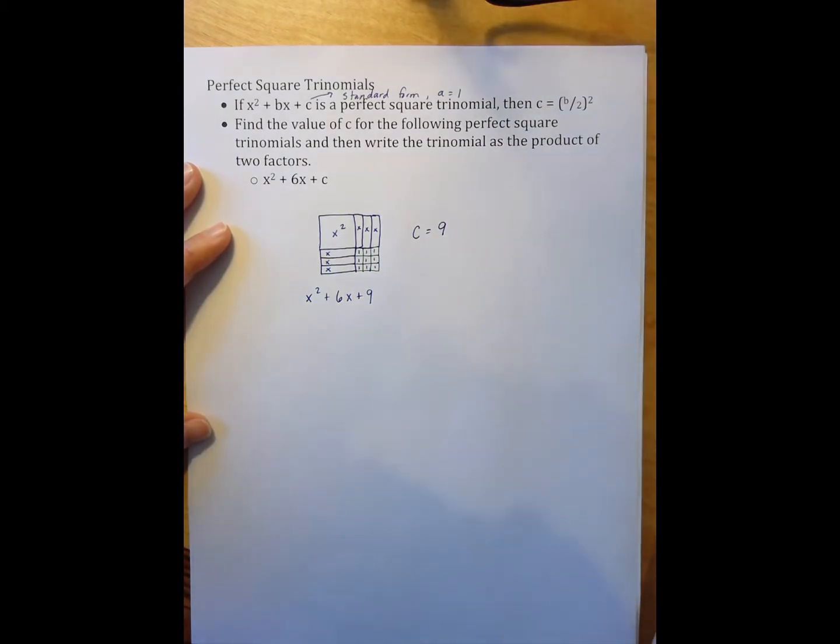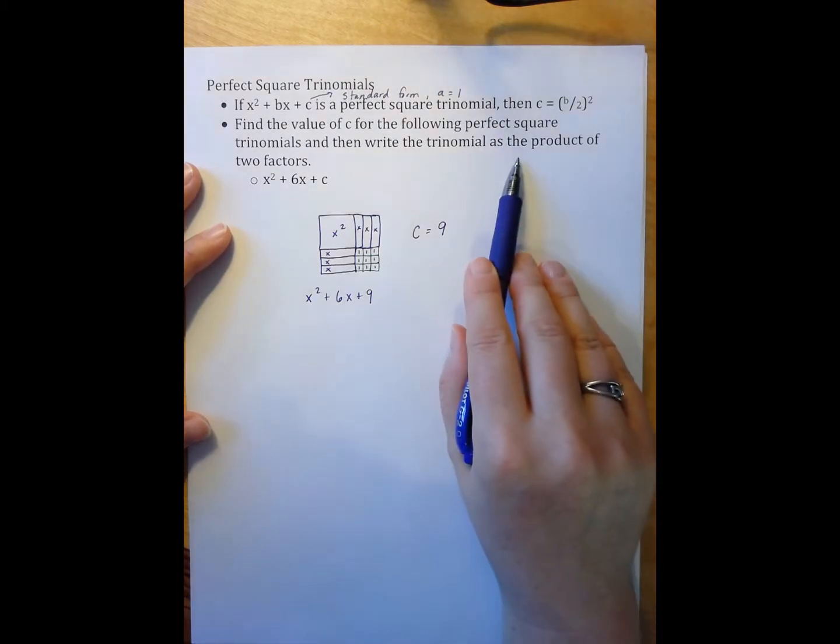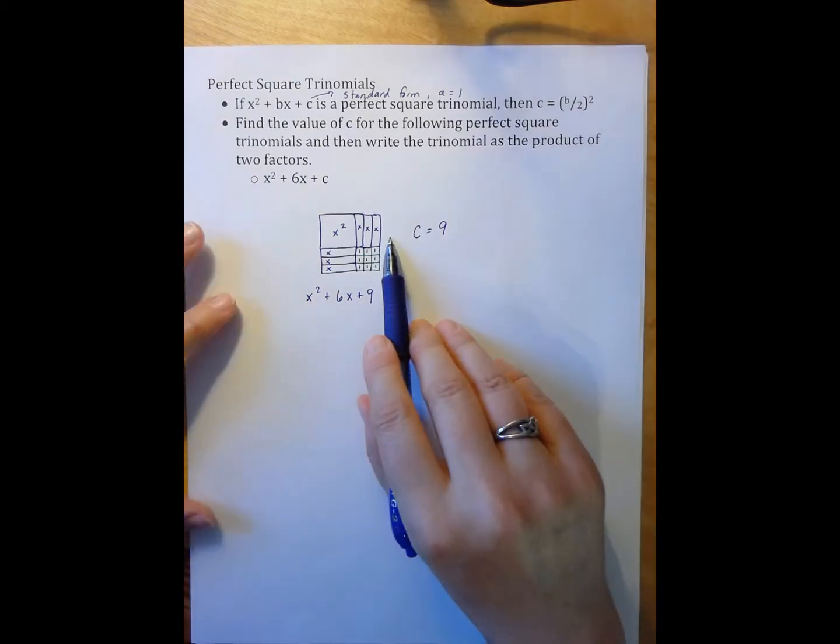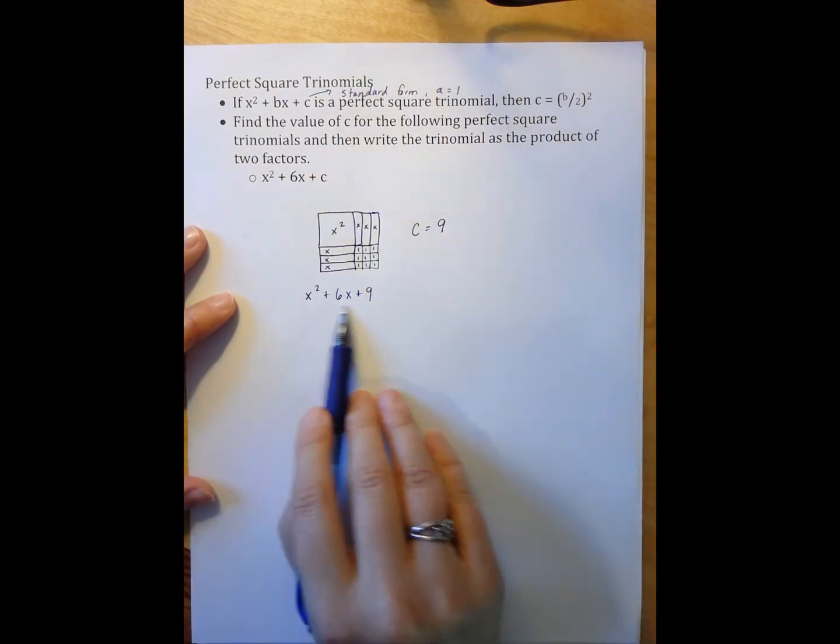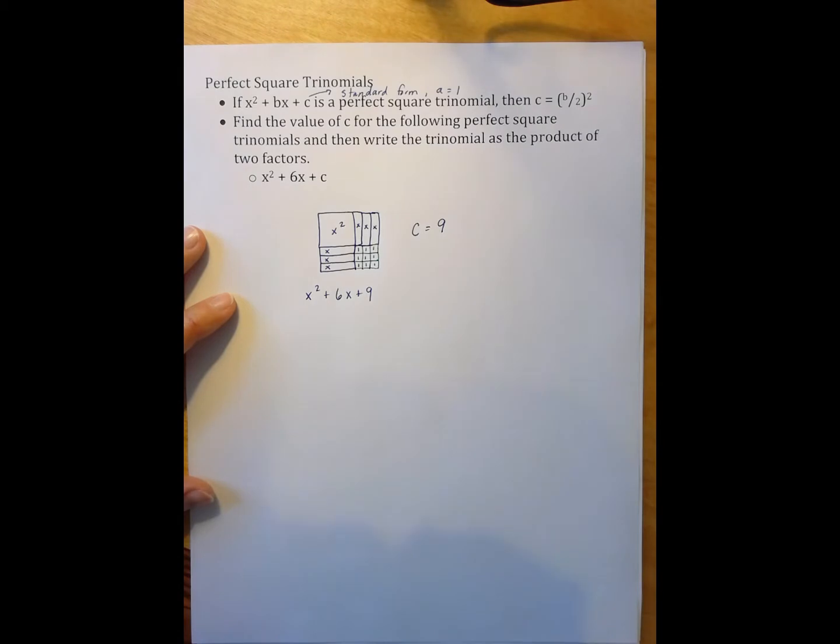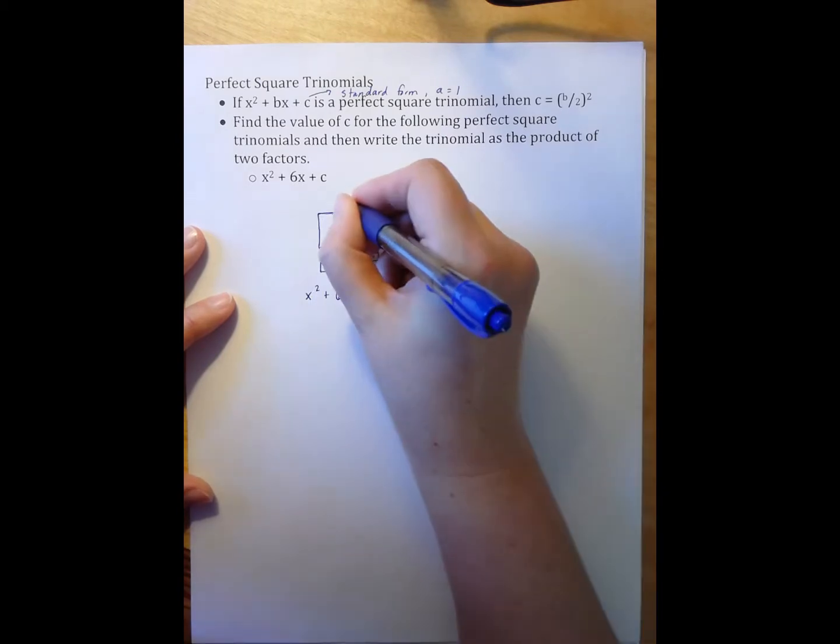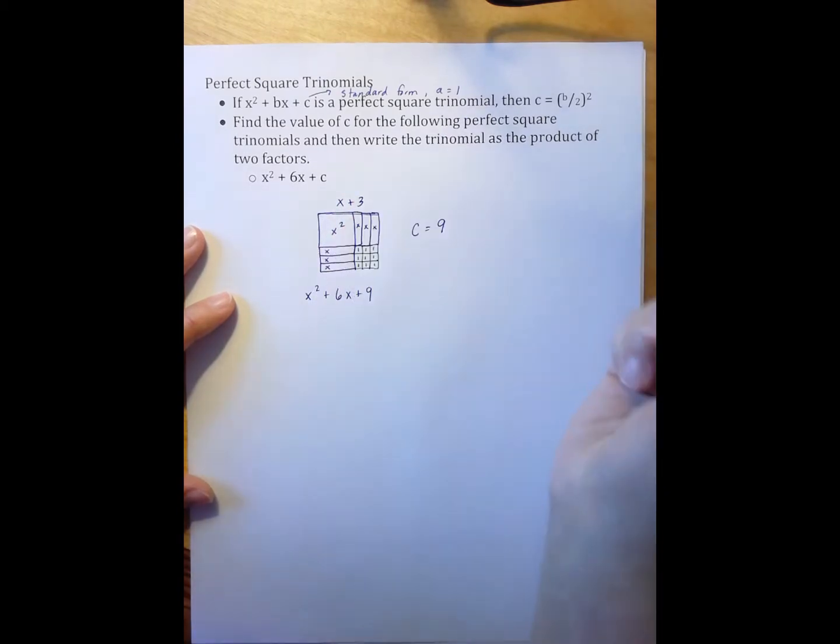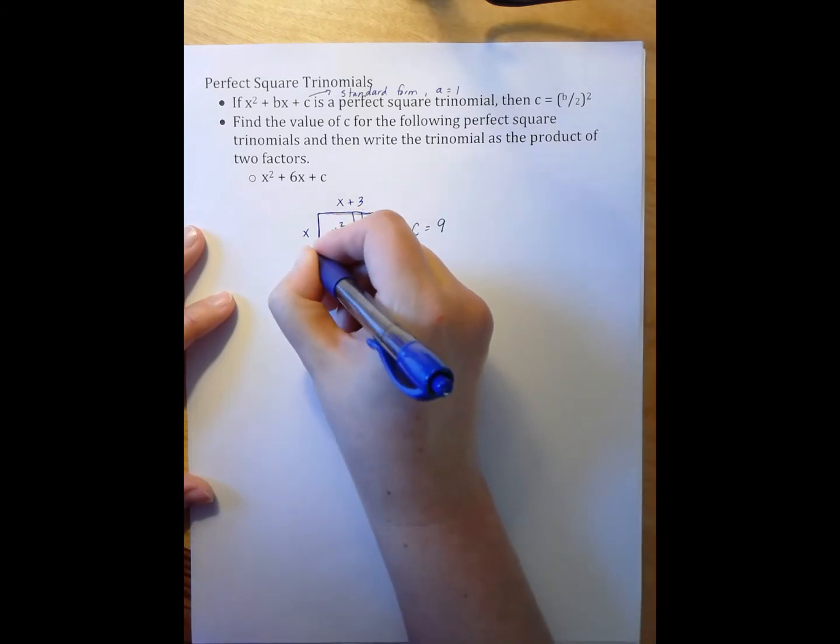Now the directions here ask me to write it not just as a perfect square trinomial, but also as a product of two factors. So we have here a square. And so I can find, if this is the area of the square, I can represent that area as a length times a width. And so this length right here is x plus 3, and this length right here is also x plus 3.